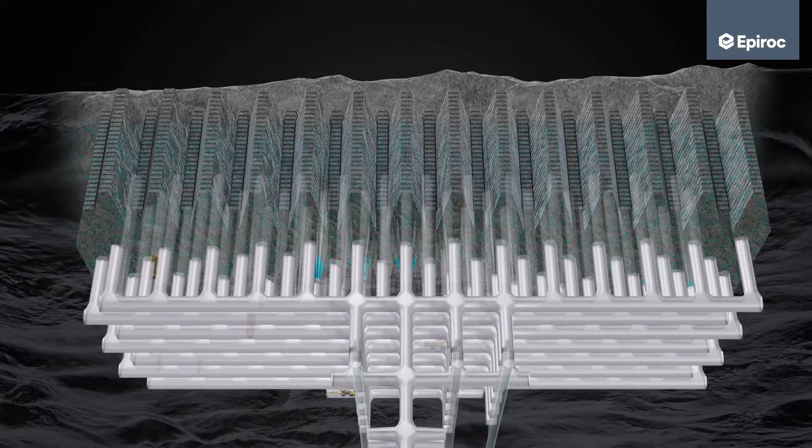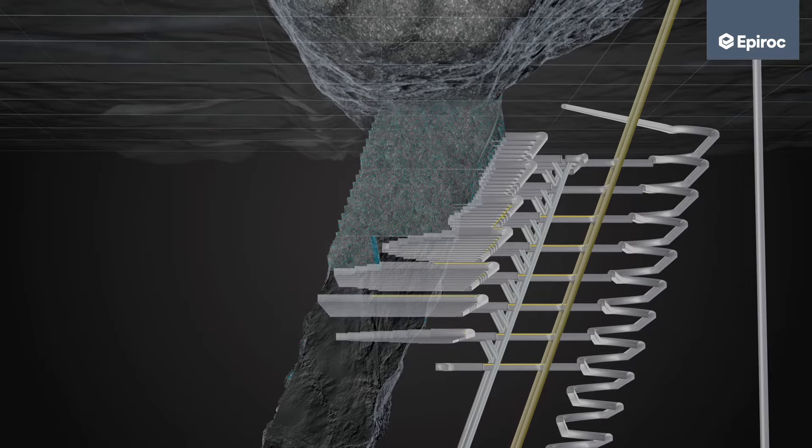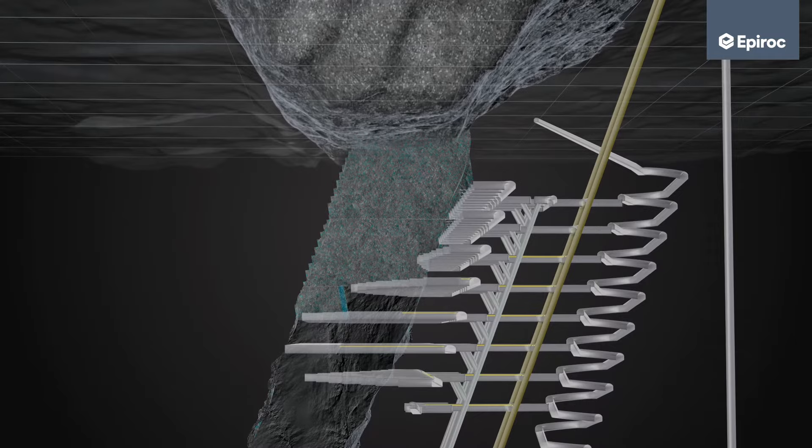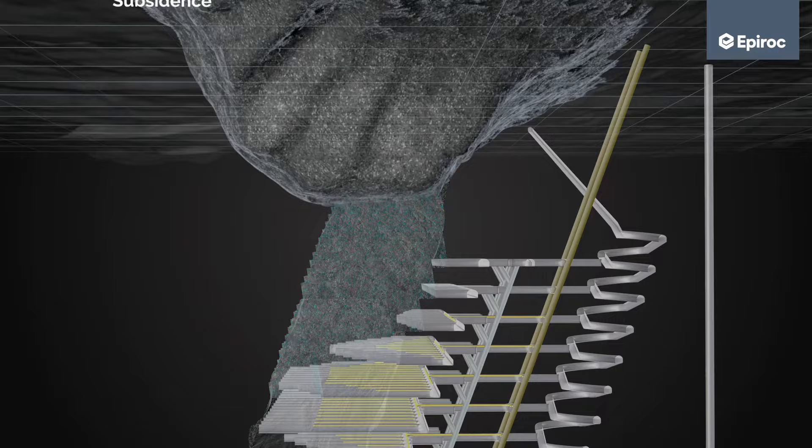Due to caving of waste rock into the blasted ore, a certain degree of ore loss and waste rock dilution comes with the method. Caving will sooner or later also cause subsidence on the surface.